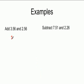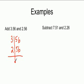Now, let's do this again. 3.56 and 2.56. The decimal point is lined up. Bring it down. 6 plus 6 is 12, carry 1, 11, carry 1, 6.